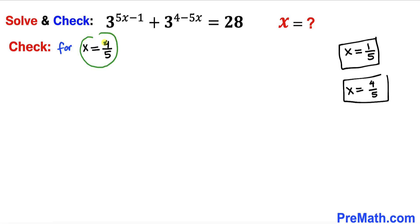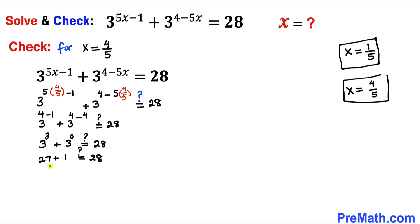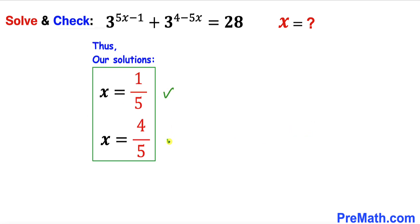Now checking x = 4/5: replacing x with 4/5, simplifying gives 27 + 1 on the left hand side equals 28, which matches the right hand side of 28. This is a true statement, so x = 4/5 is also a valid solution. Our two final solutions are x = 1/5 and x = 4/5. Thanks for watching and please subscribe to the channel for more exciting videos.